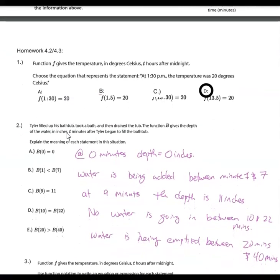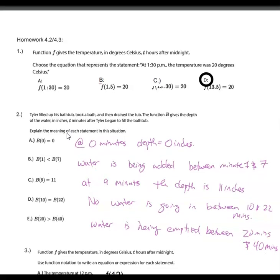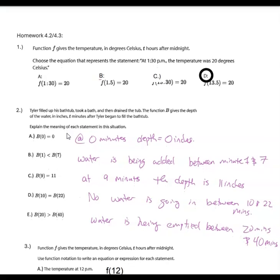Now let's go over the homework. These ones mess me up a lot — not because I don't understand it, but because they're talking about the amount of time after midnight. I messed this one up twice. The correct answer is D. It says F gives the temperature in degrees Celsius, T is hours after midnight. When I saw 1:30 PM, I first thought 30 minutes is half an hour so it's 1.5, thinking it was B. Then I realized 1:30 PM is actually 13 hours past midnight, but 30 minutes is half an hour, making it 13.5. So the answer is F of 13.5 equals 20 degrees.